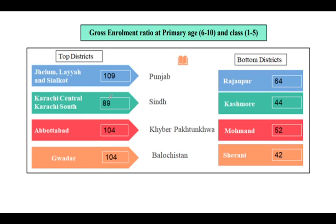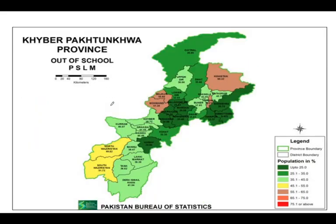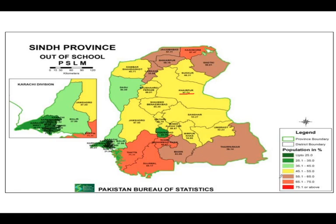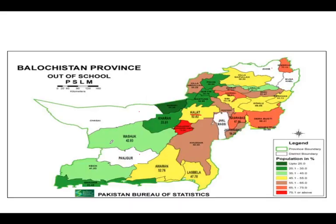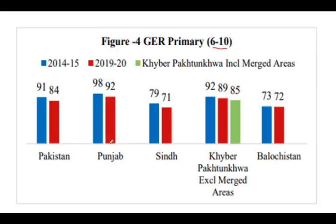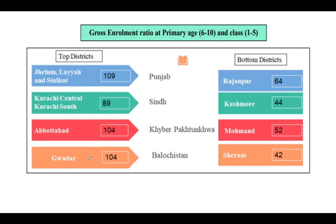The top gross enrollment areas are Jhelum, Lahore, and Sialkot, with a GER ratio of 109, followed by Karachi Central where very few individuals drop out of school. Abbottabad and Gwadar also show concerned parents actively enrolling children. The bottom districts for gross enrollment are Rajanpur, Kashmore, Kohlu, and Shirani — areas with the lowest enrollment intensity.